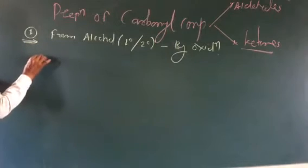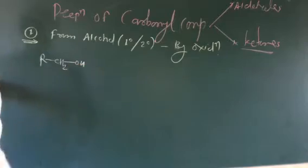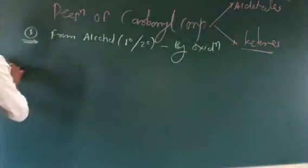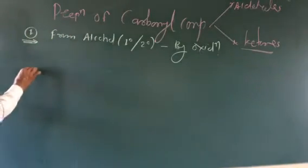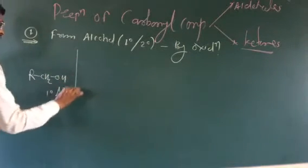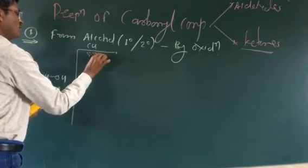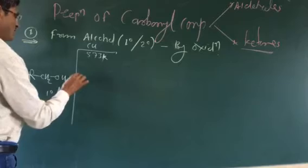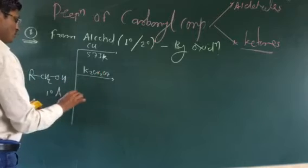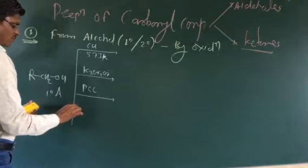The starting material is RCH2OH, which is a primary alcohol. This primary alcohol is treated with oxidizing agents such as K2Cr2O7, copper at 573 Kelvin, sodium dichromate, and PCC — pyridinium chlorochromate.